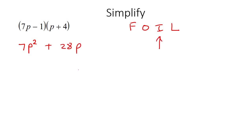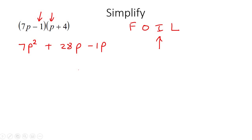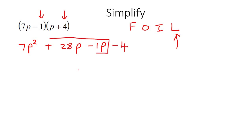The next step is I, the inner one multiplied by the inner one — these two are on the inside whereas those two are on the outside. Multiplying those together gives you negative 1p. Then L — last times last — the last one in each bracket — gives you negative 4. These two are both p terms, so put them together: 28 take away 1 is 27p.